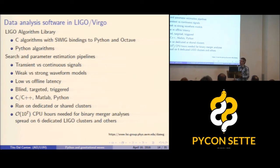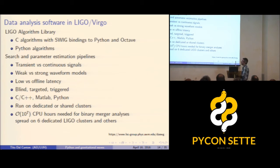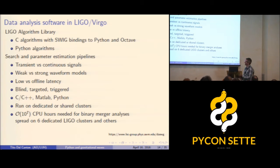These searches are extremely computationally expensive. The LIGO collaboration and Virgo have dedicated clusters for this analysis, as well as shared clusters with other experiments. The analysis which reported this binary black hole coalescence required an astonishing number of CPU hours, spread across several LIGO clusters including the Atlas cluster in Hannover where I work — the largest cluster dedicated only to gravitational wave data analysis.